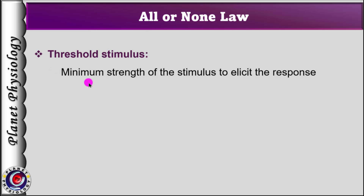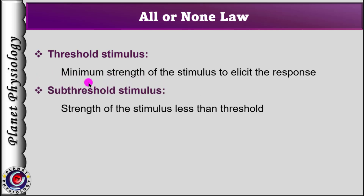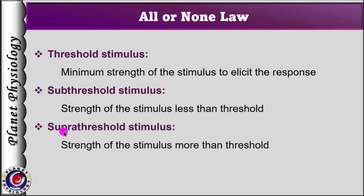When the stimulus is inadequate, the tissue does not respond at all — the 'none' phenomenon. Any strength below the threshold is termed a sub-threshold stimulus and does not elicit any response from the tissue. Whereas all strengths above the threshold are supra-threshold stimuli.